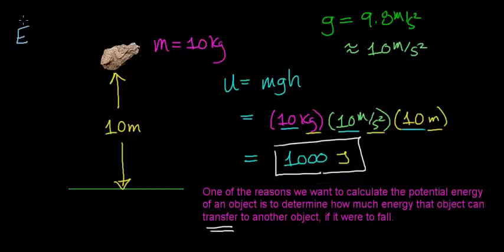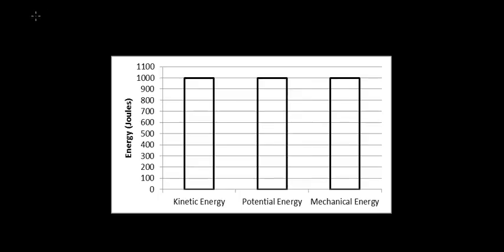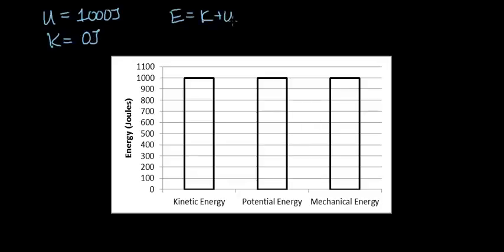One of the other things we like to do is talk about the total mechanical energy an object has, which is the total kinetic energy plus the total potential energy of the object. In this case, if this rock is motionless, it has no kinetic energy — all of its energy is stored or potential energy. So if this object has 1,000 joules of stored energy and its kinetic energy is zero joules because it's resting motionless, then its total energy — the sum of its kinetic plus its potential — will work out to be 1,000 joules as well.